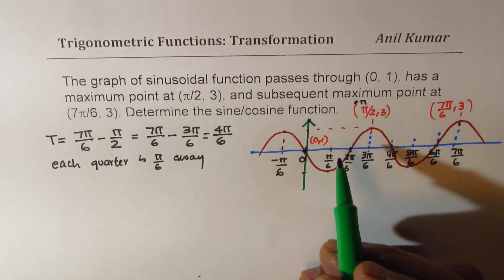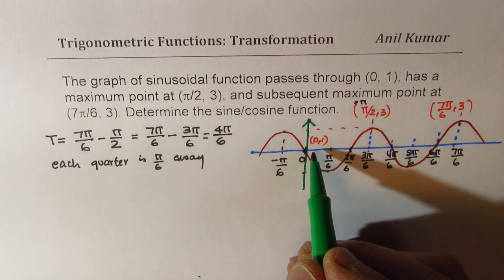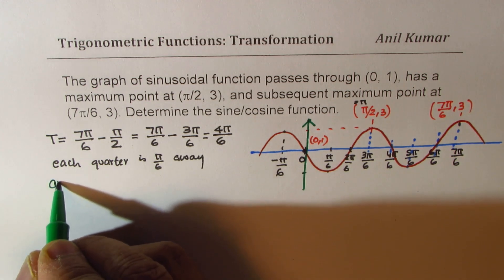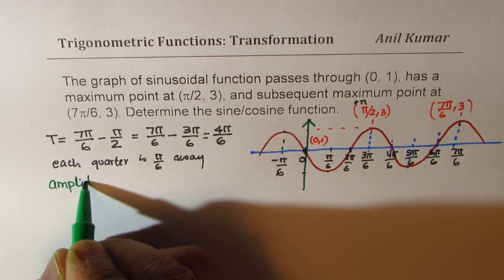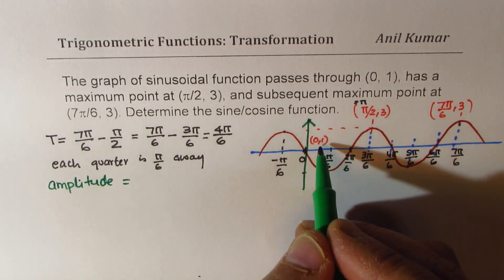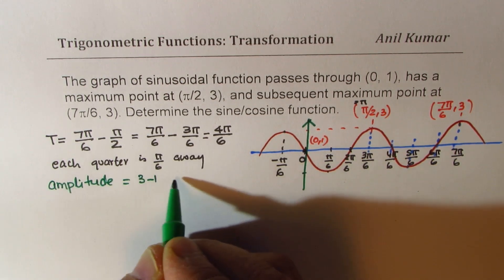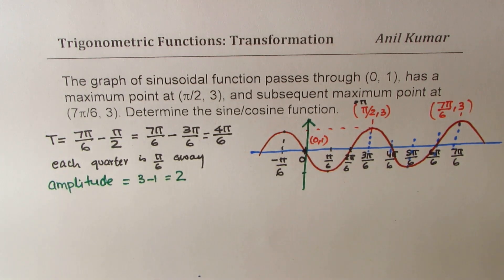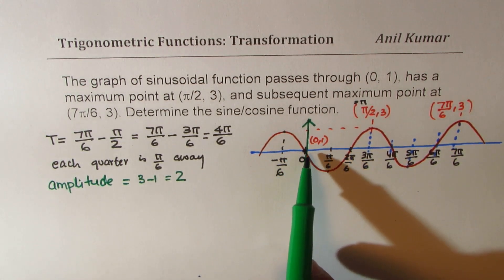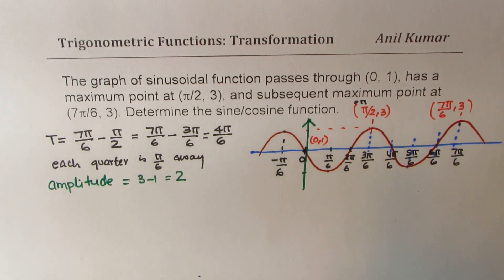So what we have here is from 1 to go to the maximum, that means amplitude is equal to 3 minus 1, which is 2. (0, 1) is on the axis, as you can see from here.